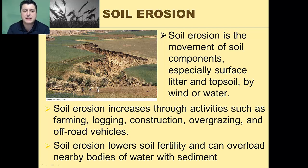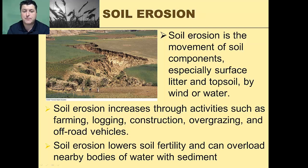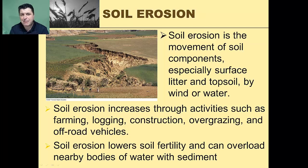Soil erosion lowers soil fertility because what comes off the soil as a result of erosion is organic material and nutrient-rich topsoil. Soil erosion can also overload nearby bodies of water with sediment, which impacts those water bodies' ability to support photosynthesis, and as those bodies of water fill, it also reduces their overall volume and flow.